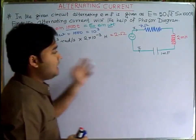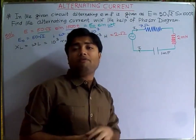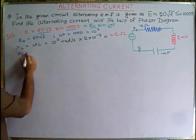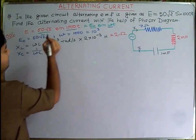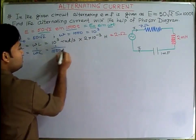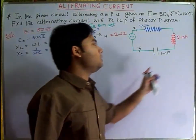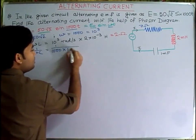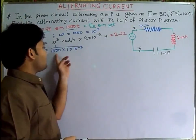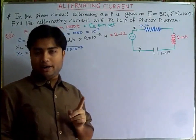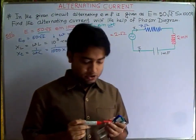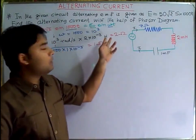For the capacitive reactance: XC = 1/(ωC) = 1/(1000 × 1 × 10⁻³). The 1000 and 10⁻³ cancel, leaving XC = 1 ohm.